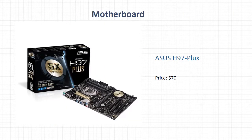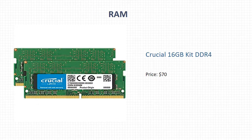The second component I want to introduce is the motherboard. The one I chose is the Asus H97 Plus. This motherboard supports up to three displays and has a perfect 4K full HD visual effect. It's an essential accessory for editing because visual effects play an important role in video, and its price is $70.